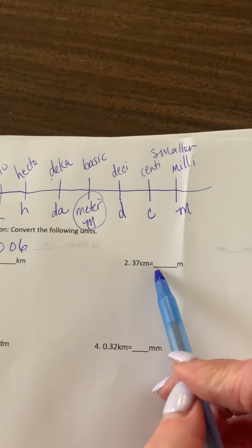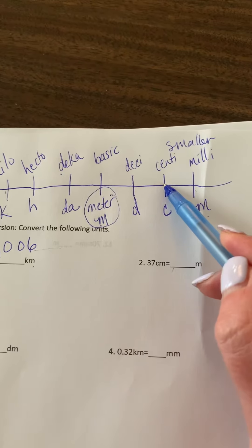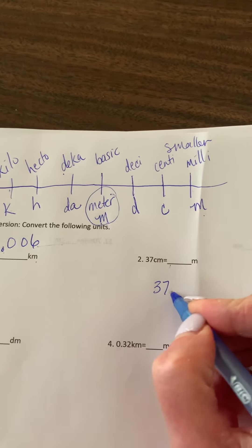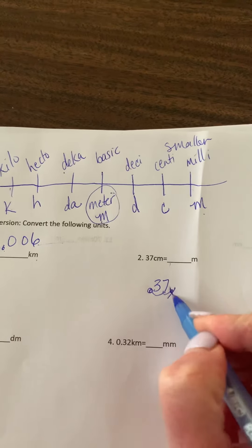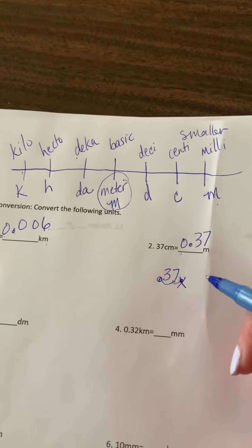So now let's do this one. 37 centimeters to meters. So again, we start at the centimeters, and then we're going to move to meters, and that is a move of two to the left. So where's the original decimal? At the back, we're going to move two to the left. Here's our new decimal. We cross that one out. The answer would be 0.37 meters, or zero and thirty-seven one-hundredths of a meter.